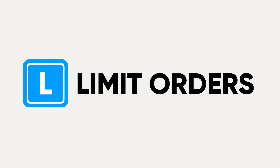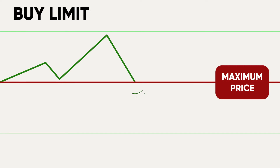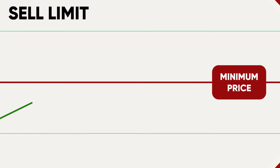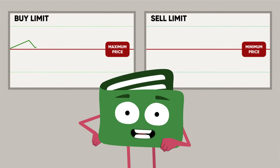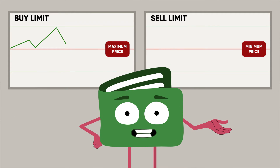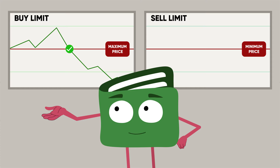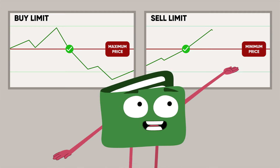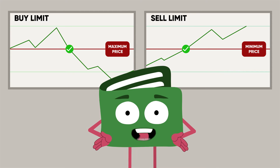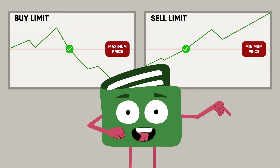Now it's time to talk about limit orders, which give you more control over your trades. A limit order is what you use when you want to buy or sell a stock, but you don't want to pay more than a specified amount for it. The same concept applies when selling a stock using a limit order – you won't give it up for less than the amount you specify. This means that the trade won't execute until the stock reaches the limit price or better. Better when trading stocks means a lower price when buying and a higher price when selling. Basically, limit orders allow you to buy low and sell high.